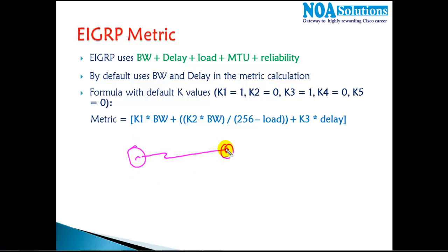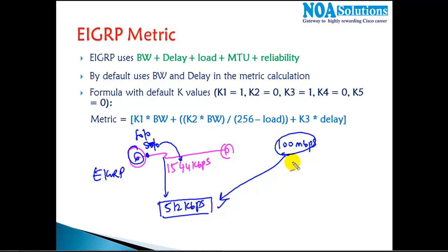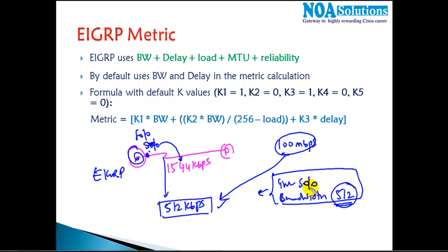Even though your link supports 1544 kbps, the actual traffic you can send depends on the service provider — say, 512 kbps. The problem with EIGRP is that when calculating the metric, it only looks at the bandwidth configured on the interface, not what the service provider gives. So we need to change the interface bandwidth to match what the provider actually gives, especially when running dynamic routing protocols.